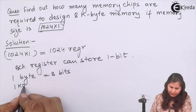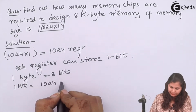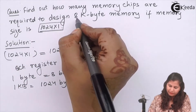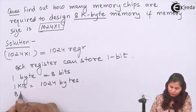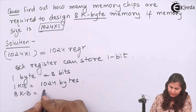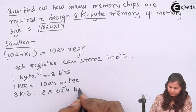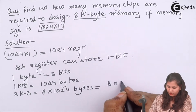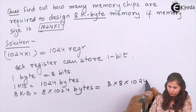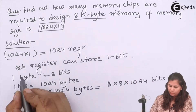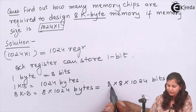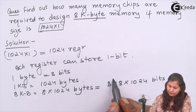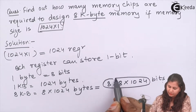Now we know that 1 byte is equal to 8 bits, and 1 kilobyte is equal to 1024 bytes. Here we are having the memory size as 8 kilobyte, so 8 kilobyte means 8 x 1024 bytes. Because 1 byte is having 8 bits, we multiply by 8 to convert into bits.